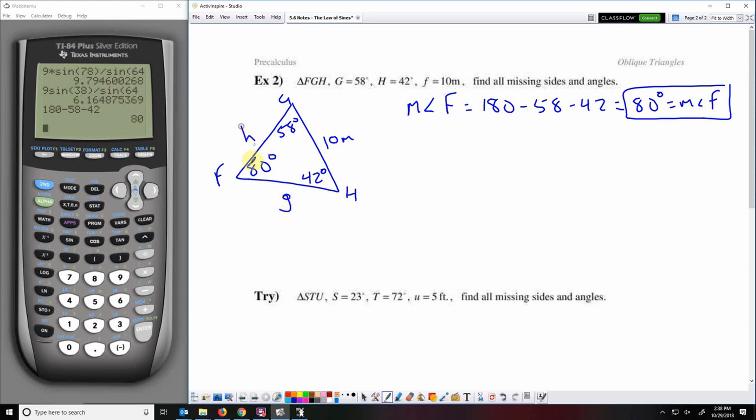So I still need to find G and H. So to do G, I would do G over sine of the opposite angle, 58 degrees, equals 10 over sine of 80 degrees. So I've got this sine 58 in the denominator. I want to multiply that across to the 10. So 10 sine 58 divided by sine 80. 8.61. And that is in meters.